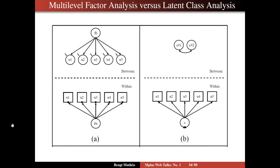On slide 34, we make a comparison between the multilevel approach taken in factor analysis and the multilevel approach taken in latent class analysis. And that becomes quite important for the latent transition analysis that we will get to. So on the left, you have the same model that we talked about in earlier slides. You have a within-factor model with random intercepts, and they are continuous latent variables on the between-level. And if we want to, we can describe the correlation between these by a single factor.